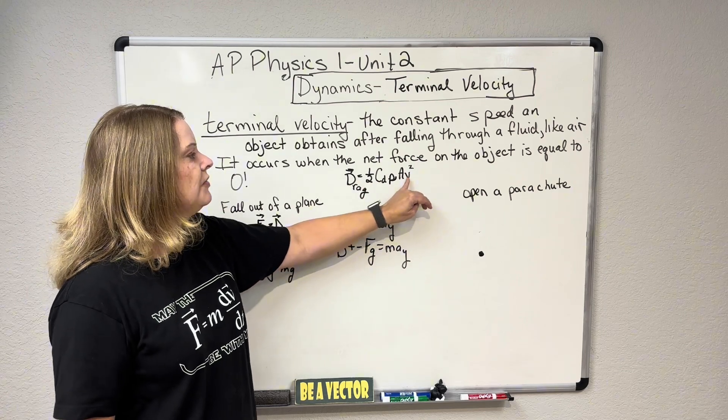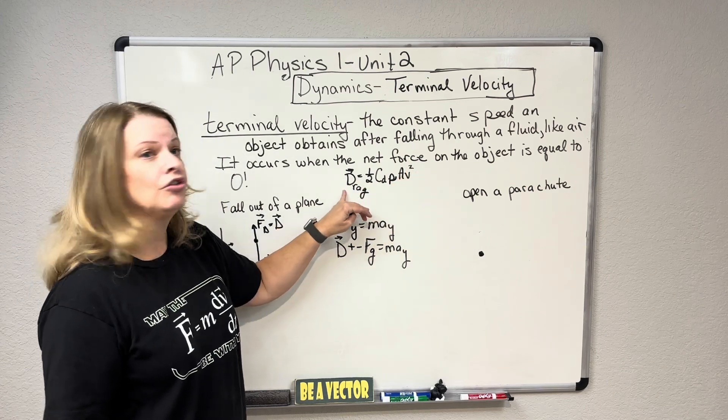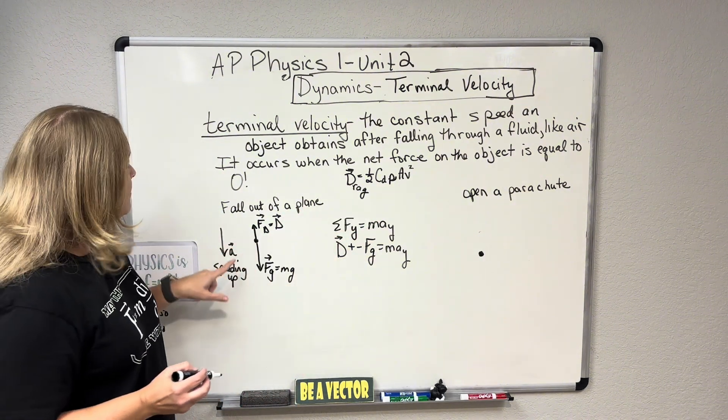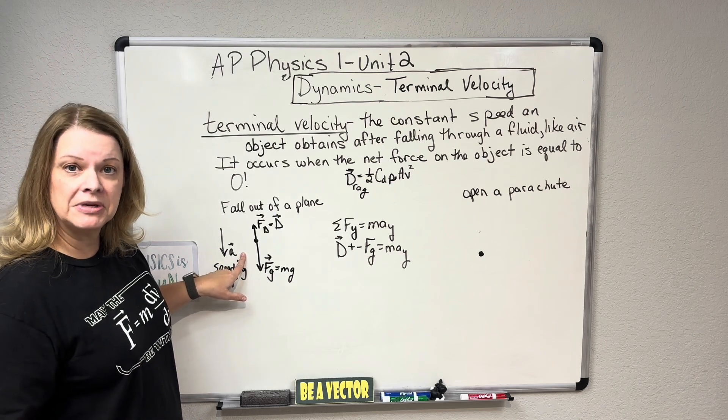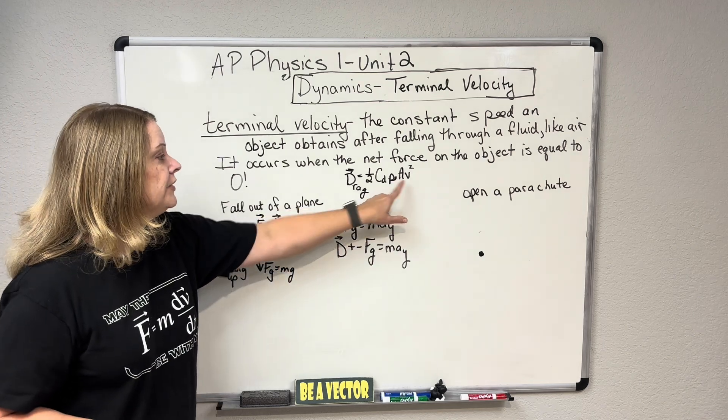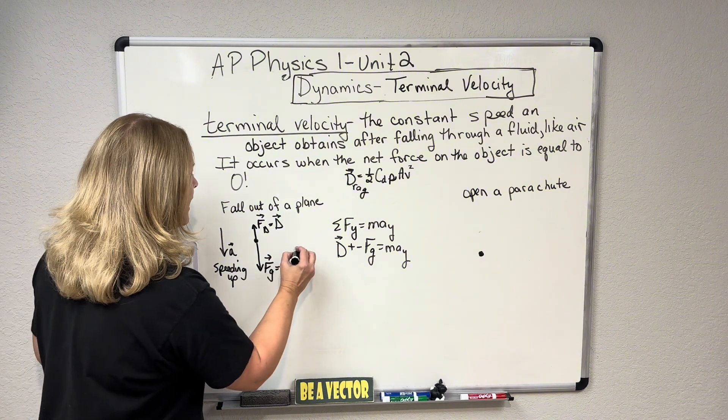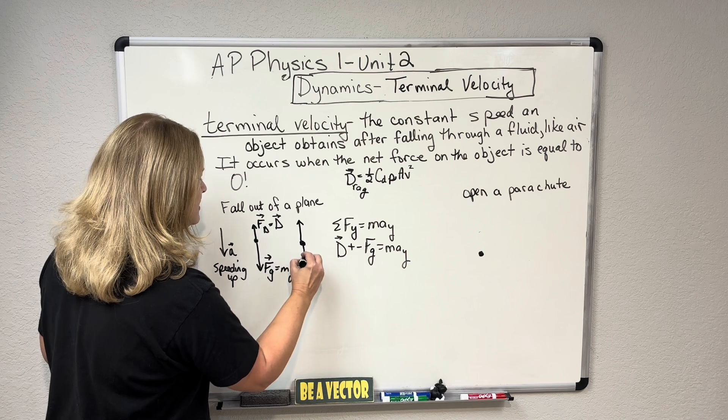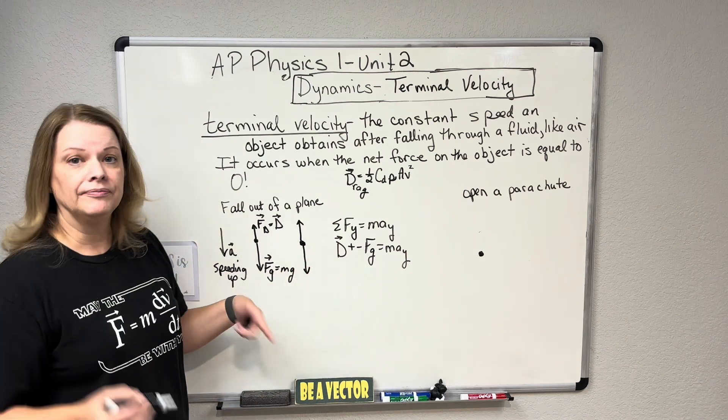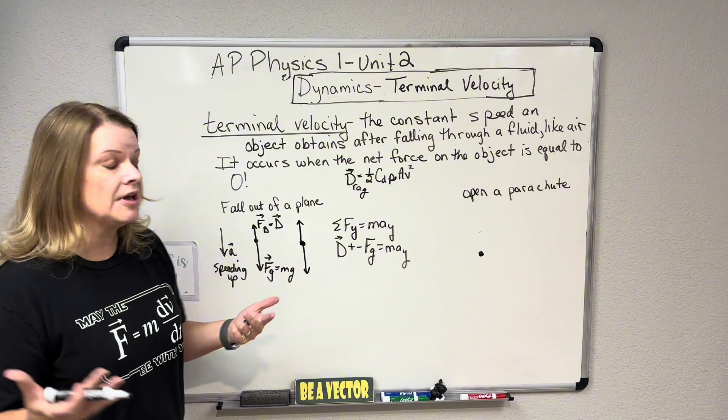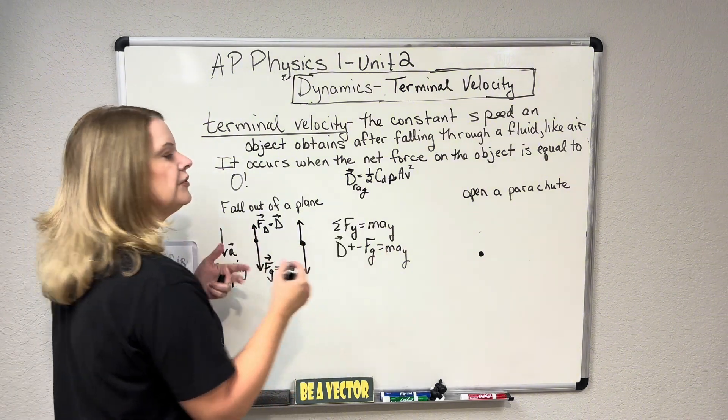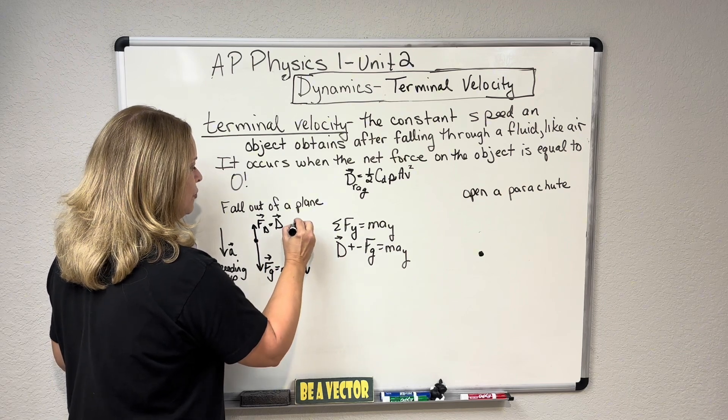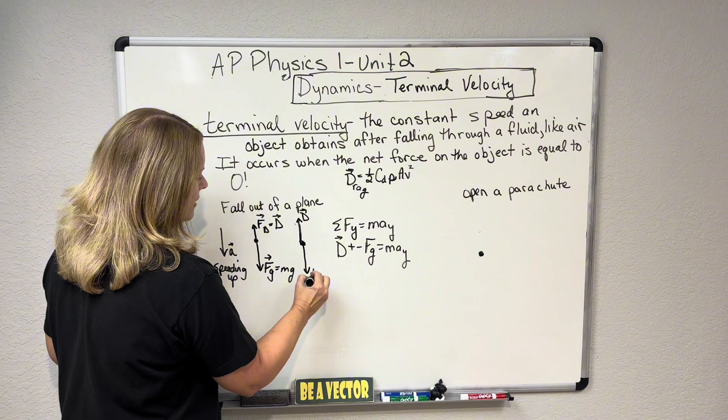So look at this as velocity increases exponentially drag increases. So what happens is you fall out of a plane, you have very little drag, but acceleration is causing you to speed up and speed up and speed up. So your velocity is increasing. So drag increases. So all of a sudden now you have this next phase where you now have a higher drag. Your force due to gravity stays the same length because you haven't gained any mass. You still have the same matter.